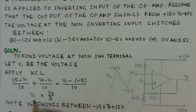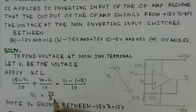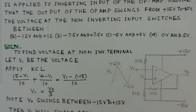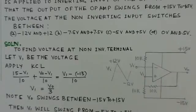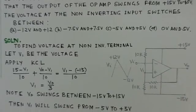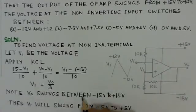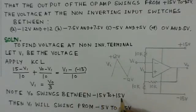KCL equation gives me the value for V1 equals to V0 by 3. This is V0 by 3 and we know the value for V0. The value for V0 is between minus 15 volts to plus 15 volts.